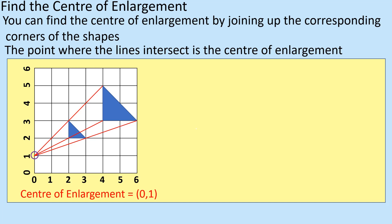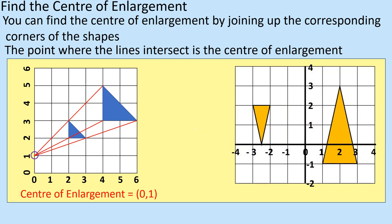You'll have seen that in the other lesson on centre of enlargement. But if you haven't done it with a negative, this becomes a little bit more awkward. Hopefully you can see that this shape has been enlarged to this one, or vice versa. In this particular case, we're not describing a full enlargement — that's what the other lesson covers. This is purely just finding the centre.